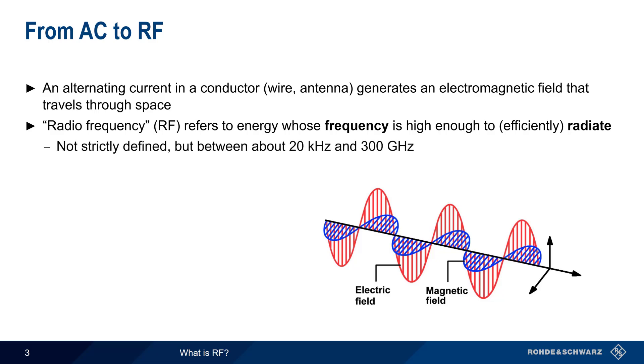There's no strict definition of what makes something radio frequency, but most engineers would consider RF to be electromagnetic energy in the range of about 20 kHz to about 300 GHz, that is 20,000 to 300 billion cycles per second.